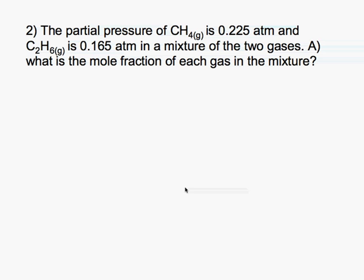Our next problem looks at the partial pressure of methane gas, CH4, which is 0.255 atmospheres, and ethane gas, C2H6, which is 1.65 atmospheres, in a mixture of the two gases. Part A asks: what is the mole fraction of each gas in the mixture?